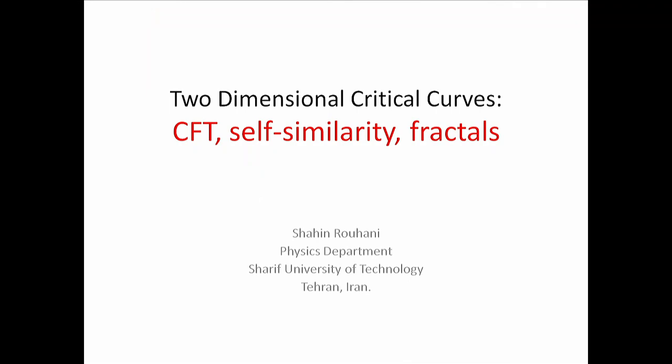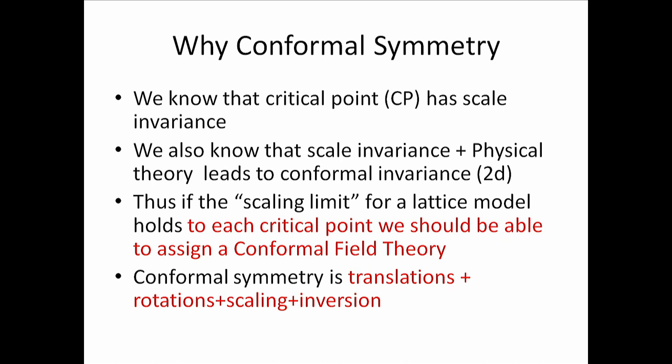Next topic: conformal field theory, self-similarity, and fractals. Professor Dar's lecture has already helped in explaining fractals, but why do we want conformal symmetry? As I explained, at the critical point we have scale invariance. Scale invariance plus a physical theory — meaning one with unitarity, locality, et cetera — leads to conformal invariance. We know this is true in two dimensions; it has some chance of being true in higher dimensions, but the complete proof doesn't exist. The proof in 2D is complete; in 3D there is an obstruction; in 4D almost everything has been done except the very last step.